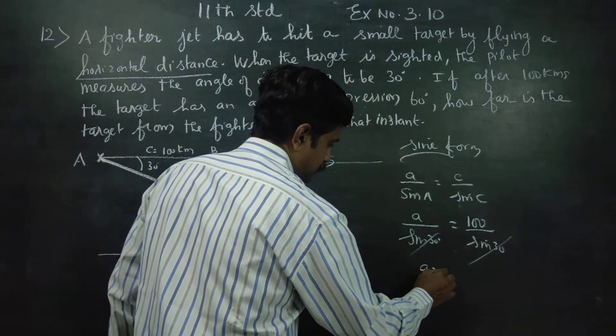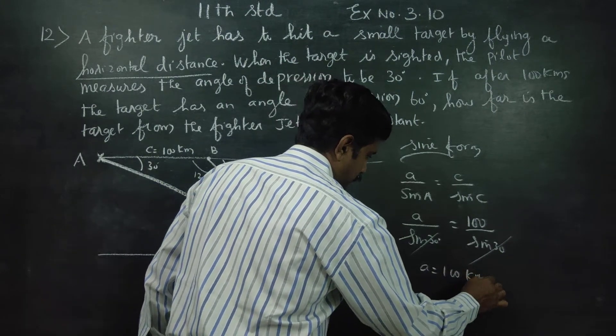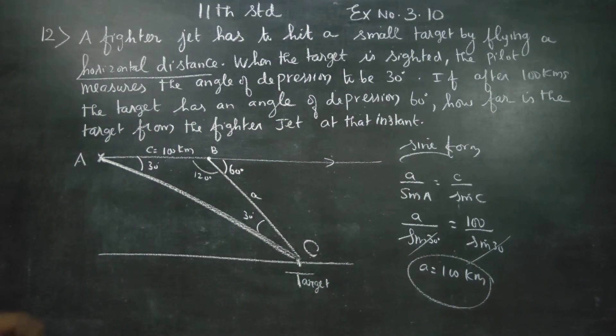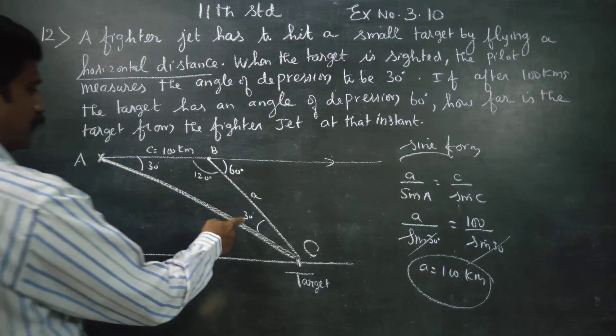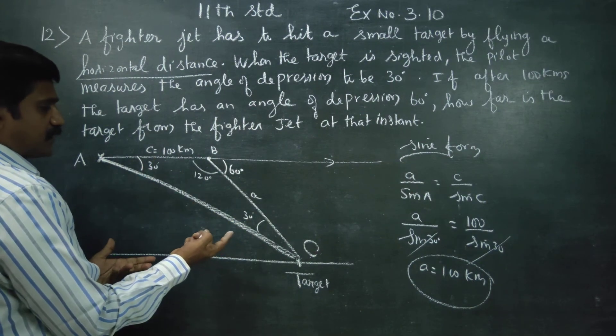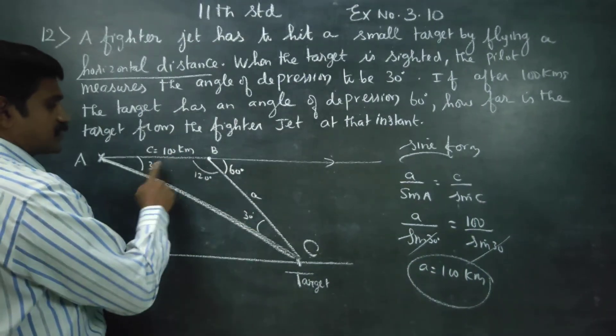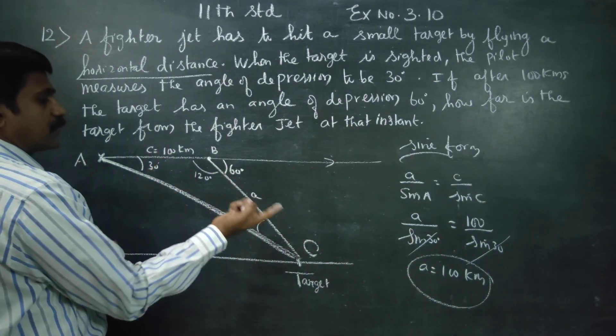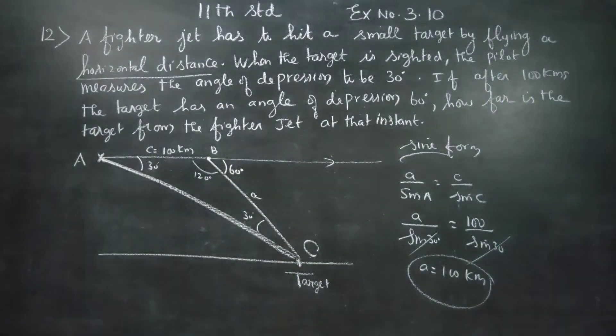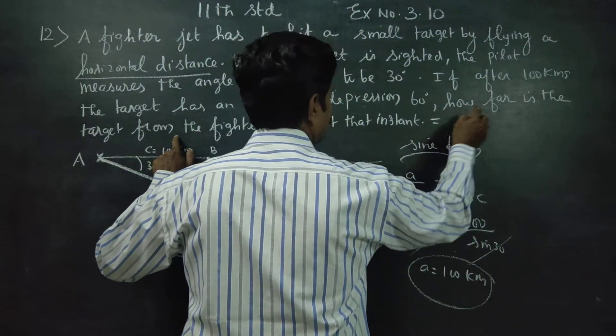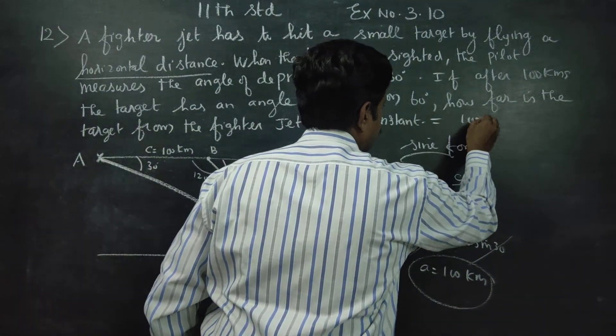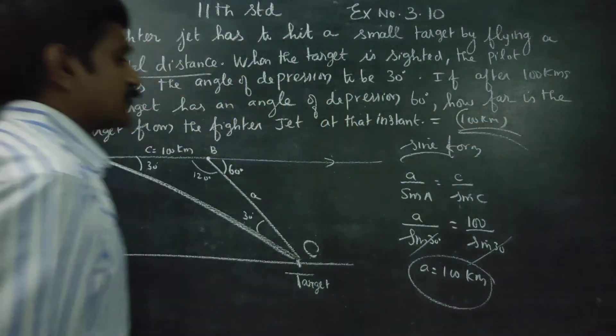So side a equals 100 kilometers. The distance between the jet and the target is 100 kilometers. It is an isosceles triangle. Your answer is 100 kilometers. Thank you.